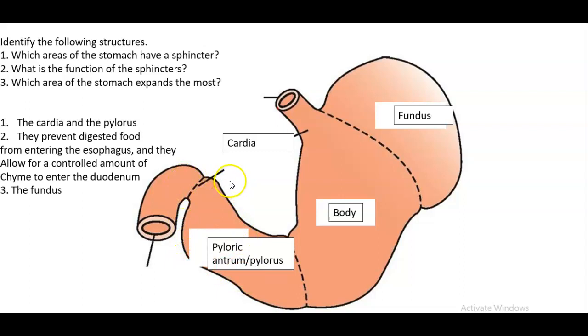And then let's see which areas of the stomach have a sphincter. So there's a sphincter in the cardia region, so cardiac sphincter, and there's a pyloric sphincter.